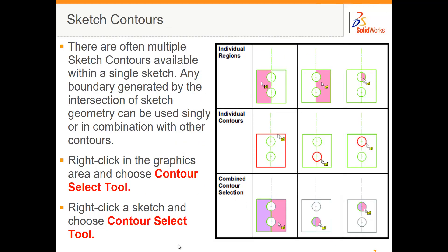Sketch contours allow you to create features from different parts of the same sketch. Here we have a sketch with two circles inside a rectangle and we can extrude different regions of this sketch. We can pick on individual contours like a rectangle or a circle, or if we press the Ctrl key we can combine different regions.